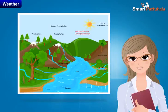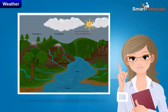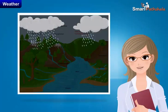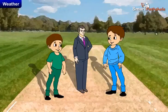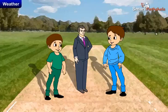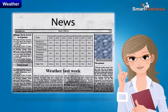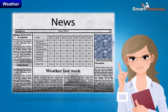In this chapter, let us learn about weather, climate, and adaptations of various animals to climate. We all might have heard the cricket commentary — before the game starts, the experts discuss the weather. In newspapers, we can see the daily weather report, which has information about the temperature, humidity, and rainfall.